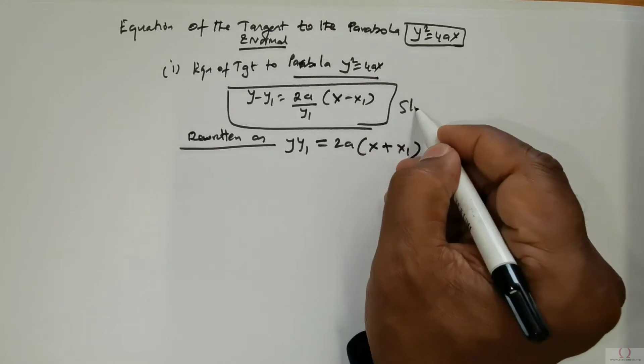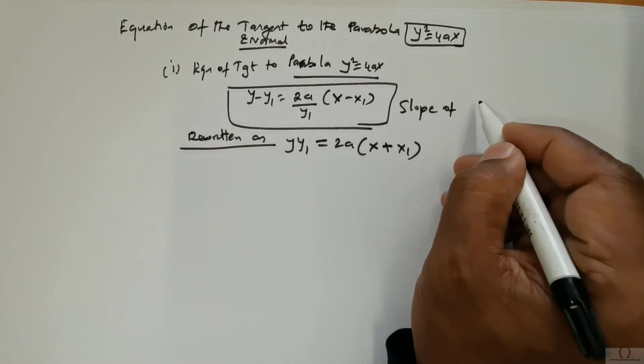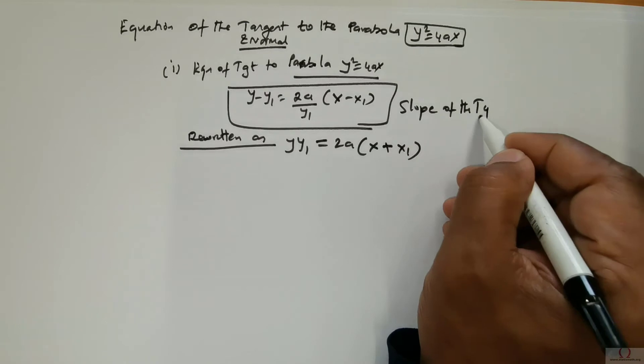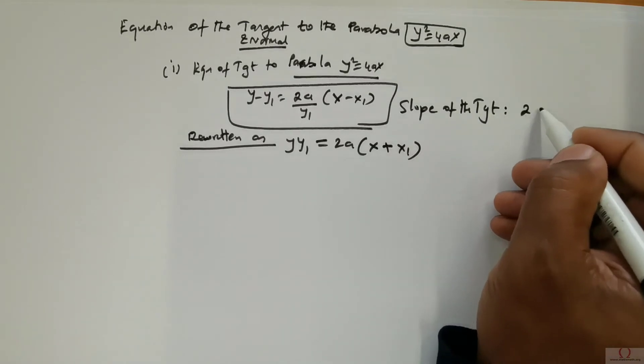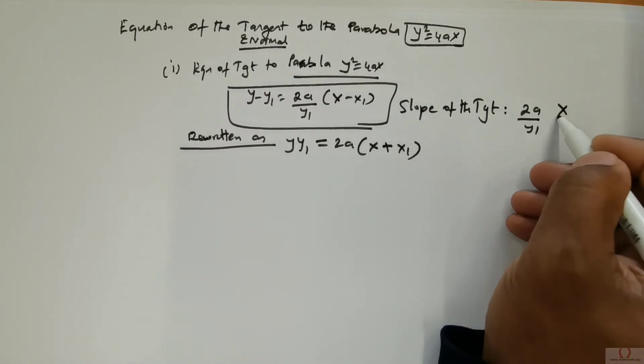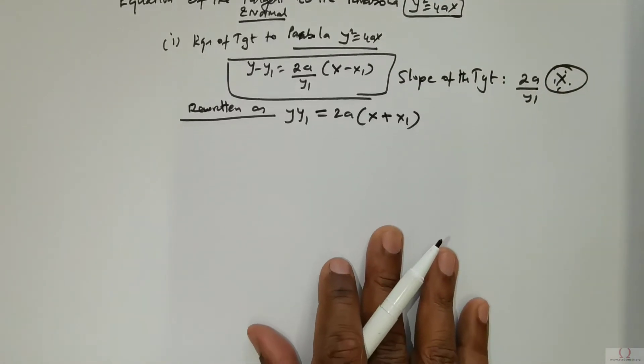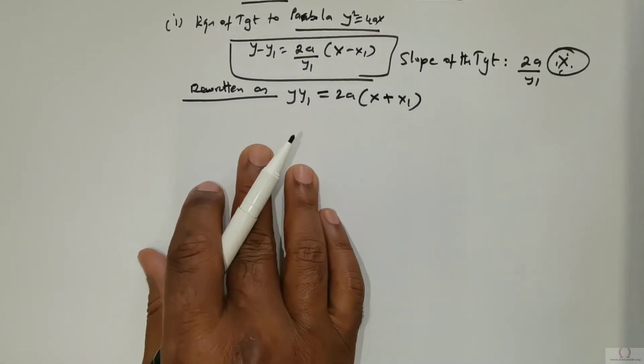Now the slope of the tangent is given to be 2a/y₁. This is very important. And so this is the first concept you got to know.